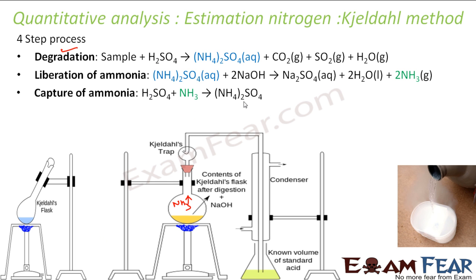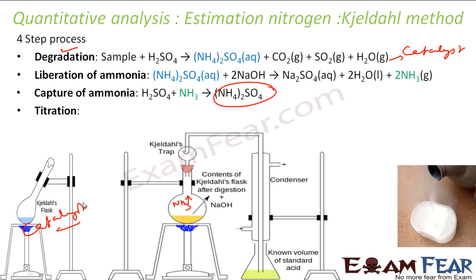You trap the ammonia in sulfuric acid to get (NH₄)₂SO₄. Using titration, you can find the concentration of nitrogen. In the decomposition step a catalyst is required — earlier mercury oxide was used but it is very toxic, so now titanium dioxide is approved as a good catalyst. You then titrate with something like Na₂CO₃ to find the concentration of nitrogen.